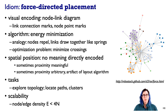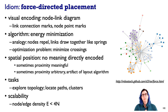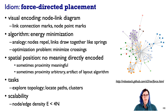The tasks people do with node-link diagrams involve exploring topological structure, path following, and looking for clusters of tightly coupled nodes — which we can clearly see in the small network using force-directed placement. As a scalability rule of thumb, if you have more than four times as many links as nodes, force-directed placement will probably not serve you well.